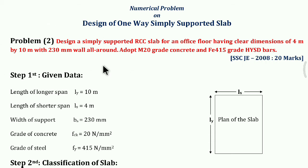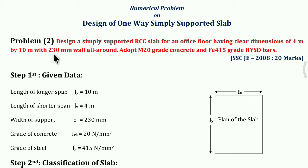Some data is given in the question. Type of slab: simply supported RCC slab. Clear dimensions: 4 meter and 10 meter. Width of support: 230 mm. Grade of concrete: M20. Grade of steel: FE415.